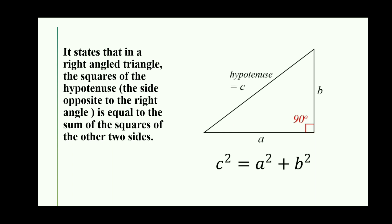Pythagoras theorem says that the square of the hypotenuse is equal to the sum of the squares of the other two sides. It's only true in the case of right angled triangles.